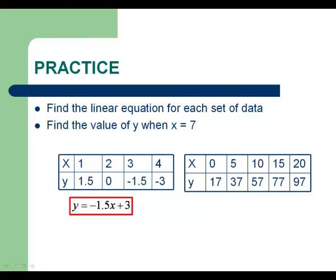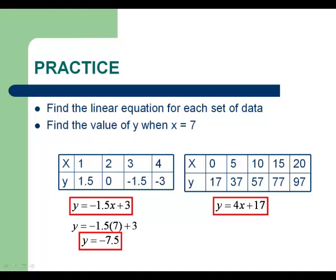Now to evaluate this one, x is 7. We plug 7 into our equation as x, and type in negative 1.5 times 7 plus 3. We get an answer of negative 7.5. This is the value of y when x is 7. Look at the second equation. You should get y equals 4x plus 17. Plug 7 in as x. 4 times 7 plus 17 is 45. This is the value of y when x is 7.